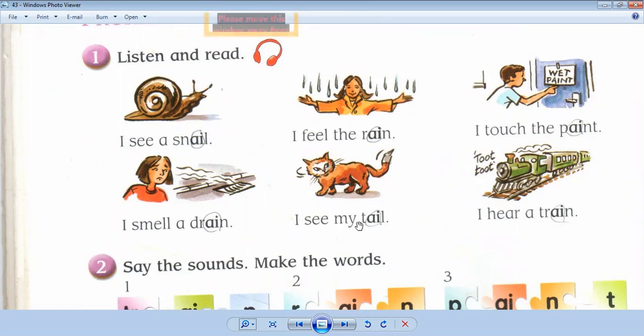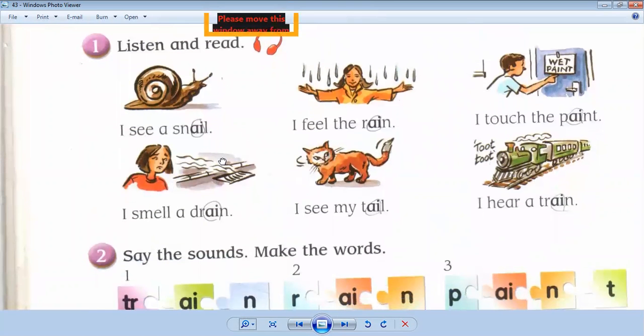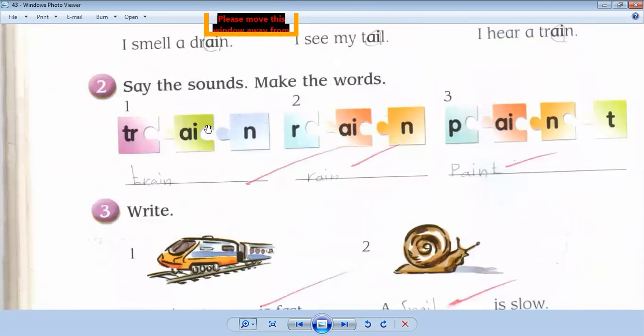I hear a train. So 'ai' - the sound of A and I together, it's 'ai'. A train. Say the sounds, make the words: train, rain, paint.